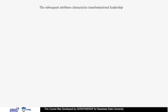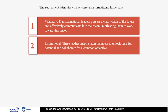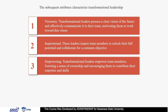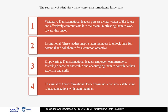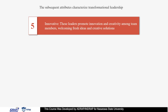The subsequent attributes characterize transformational leadership. Visionary: transformational leaders possess a clear vision of the future and effectively communicate it to their team, motivating them to work towards that vision. Inspirational: these leaders inspire team members to unlock their full potential and collaborate for a common objective. Empowering: transformational leaders empower team members, fostering a sense of ownership and encouraging them to contribute their expertise and skills. Charismatic: a transformational leader possesses charisma, establishing robust connections with team members. Innovative: this leader promotes innovation and creativity among team members, welcoming fresh ideas and creative solutions.